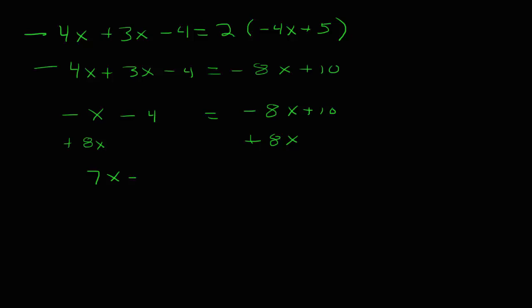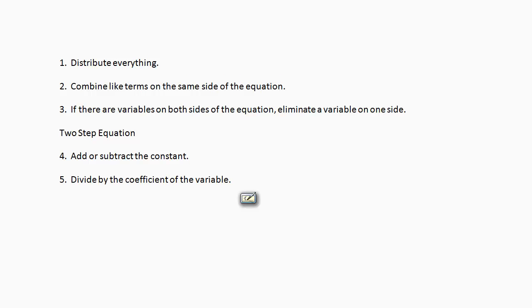This gets us 7x minus 4 equals 10. And as promised, this gets us to a two-step equation.